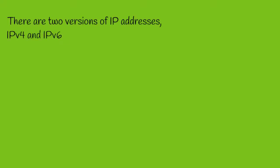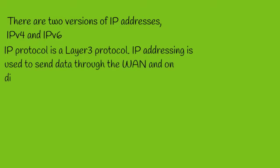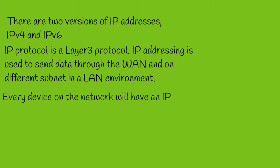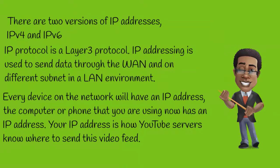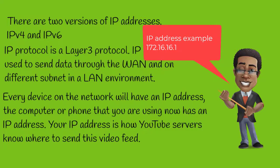There are two versions of IP addresses: IP version 4 and IP version 6, otherwise known as IPv4 and IPv6. IP protocol is a layer 3 protocol. IP addressing is used to send data through the WAN and on different subnets in the WAN environment. Every device on the network will have an IP address. The computer or phone that you're using now has an IP address so you can see this video. Your IP address is how YouTube servers know where to send this video feed, because your address is your unique identifier for the network device that you're using.